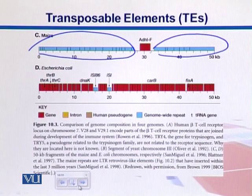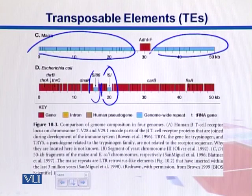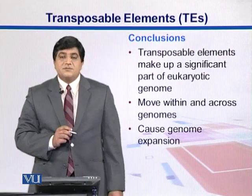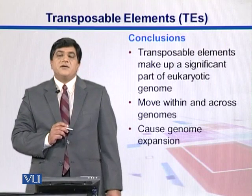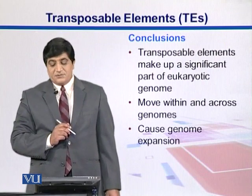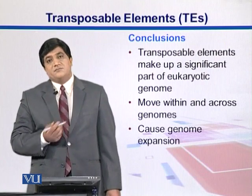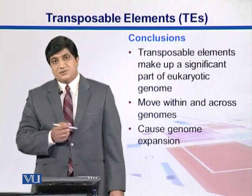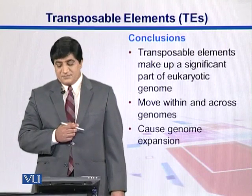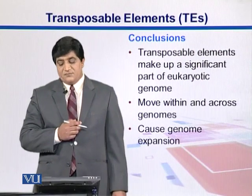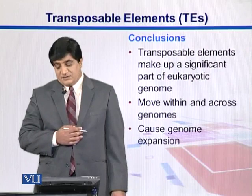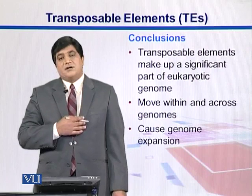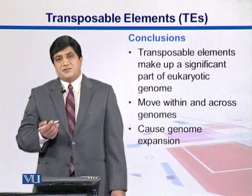In E. coli, transposable elements are also less abundant, and we see IS elements there. Overall, transposable elements make up a significant contribution to the genomes of organisms, specifically in eukaryotic organisms, where they move across the genome and cause genome expansion.